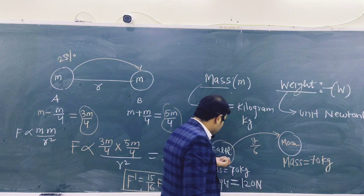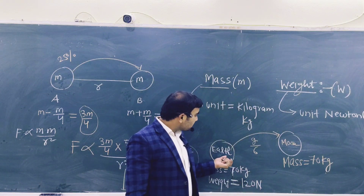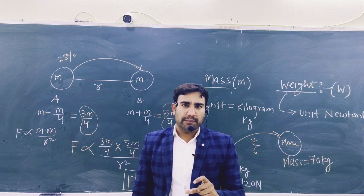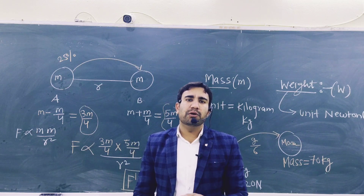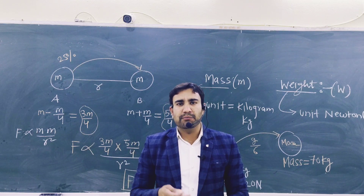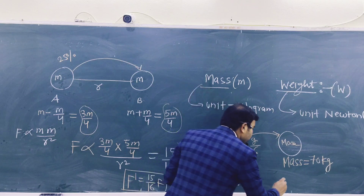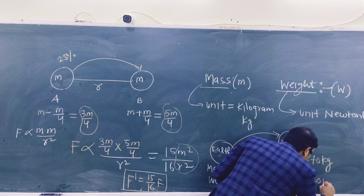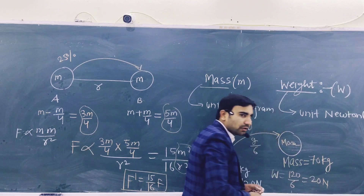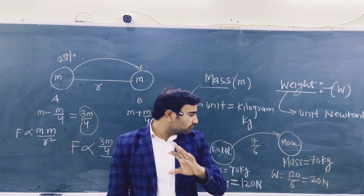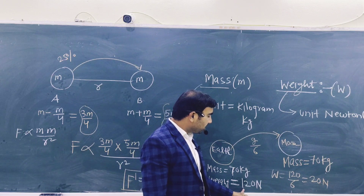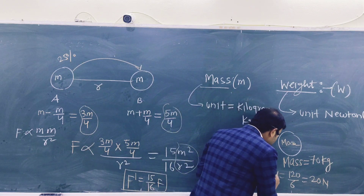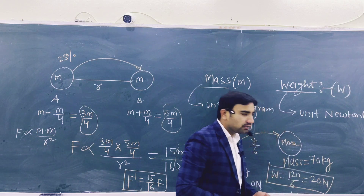The value of g on the Moon is 1/6 compared to Earth. So if you want to find the weight on the Moon, divide the Earth weight by 6: 120 divided by 6 equals 20 Newtons. So the weight on the Moon will be 20 Newtons.